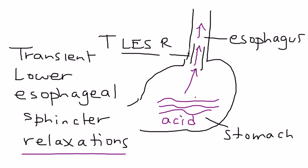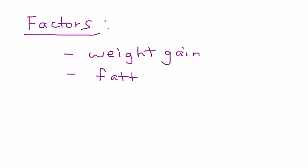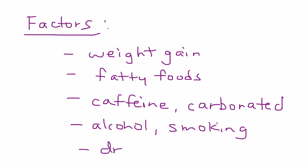The heart of GERD is this transient lower esophageal sphincter relaxation. There's a long list of reasons the sphincter can relax. The first cause is obesity. Certain types of foods such as fatty foods, certain beverages such as caffeinated or carbonated beverages, also alcohol and tobacco smoking can all contribute.